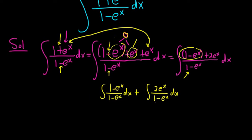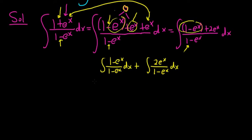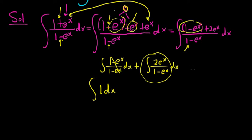By breaking it up into two integrals, the first integral becomes the integral of 1 dx — very easy because those cancel. For the second integral we can make a substitution. We'll let u be the piece on the bottom, so u = 1 − eˣ. Then taking the derivative of both sides: du = −eˣ dx.